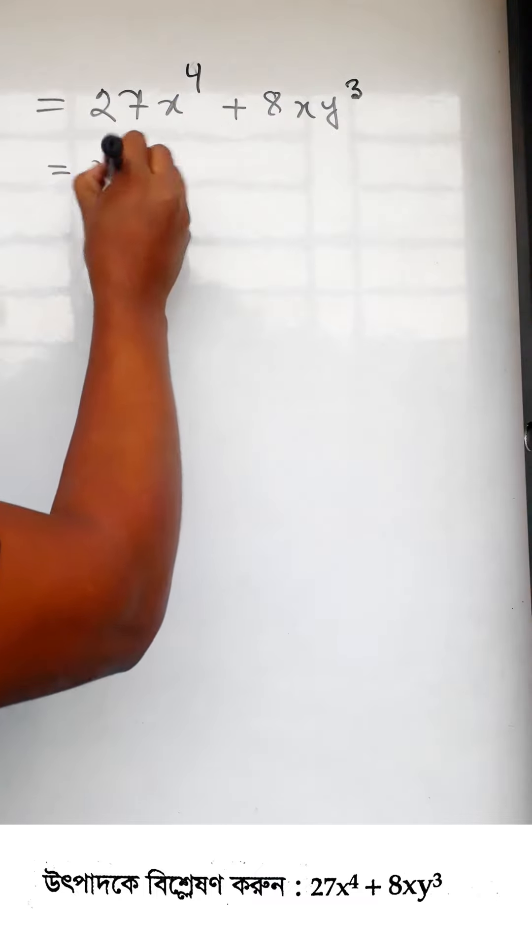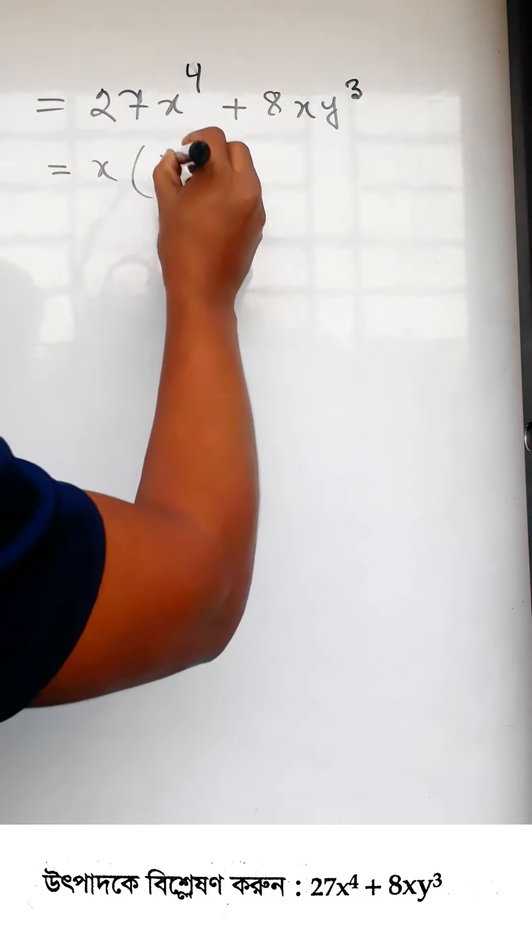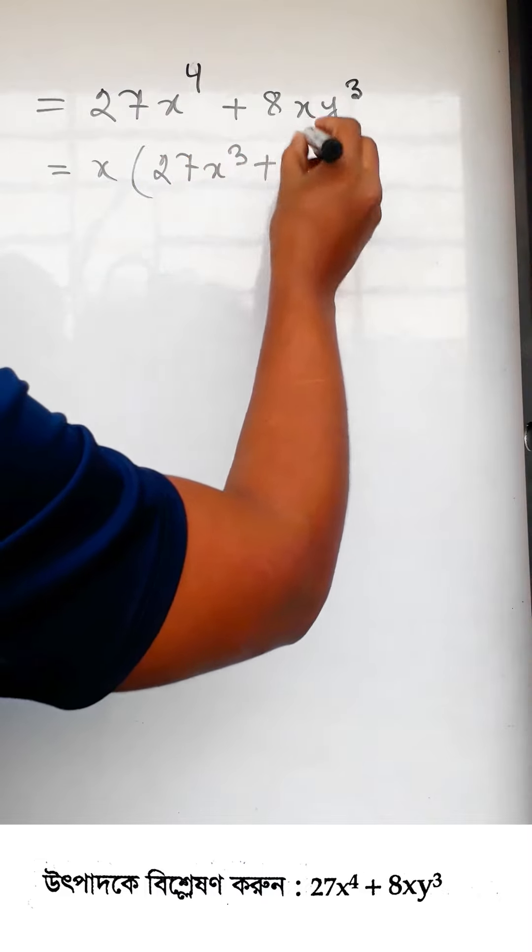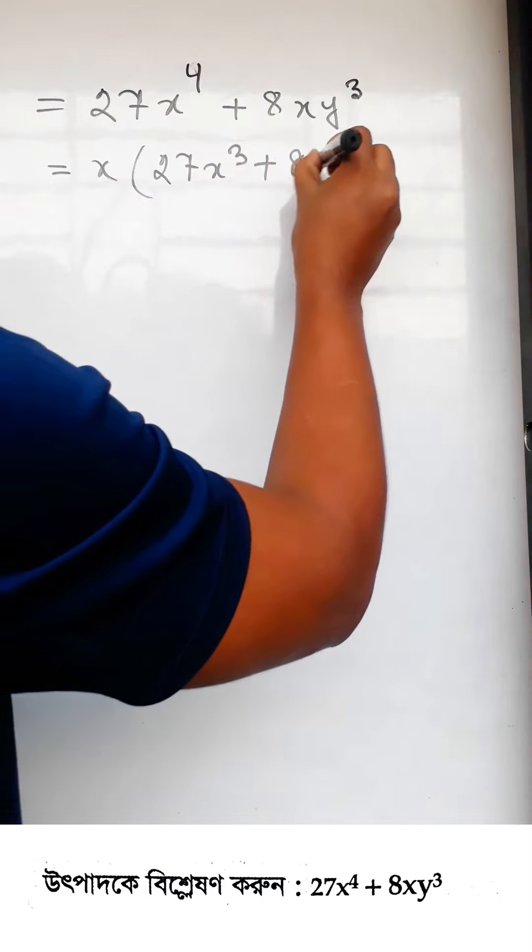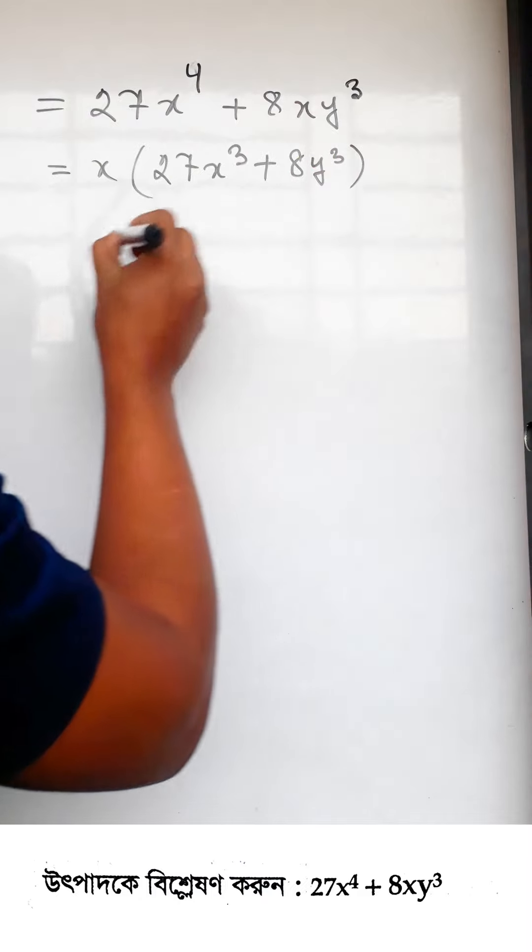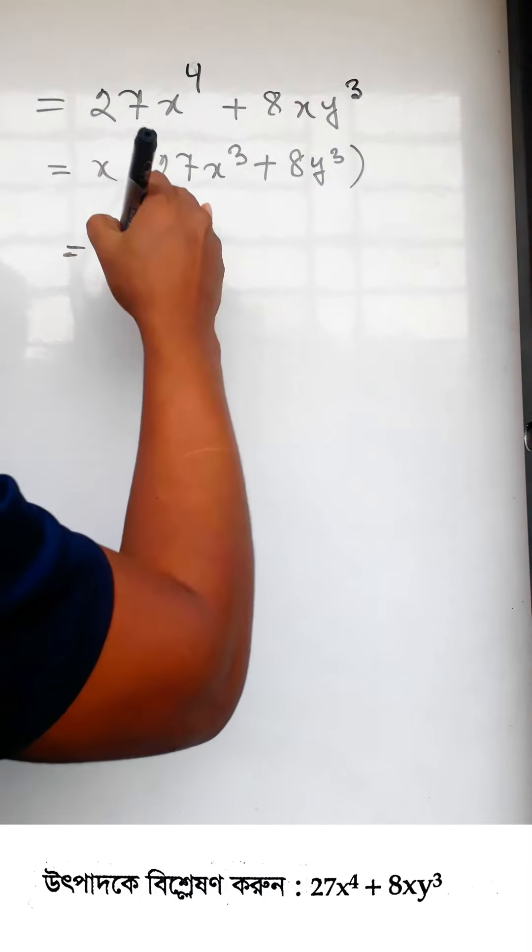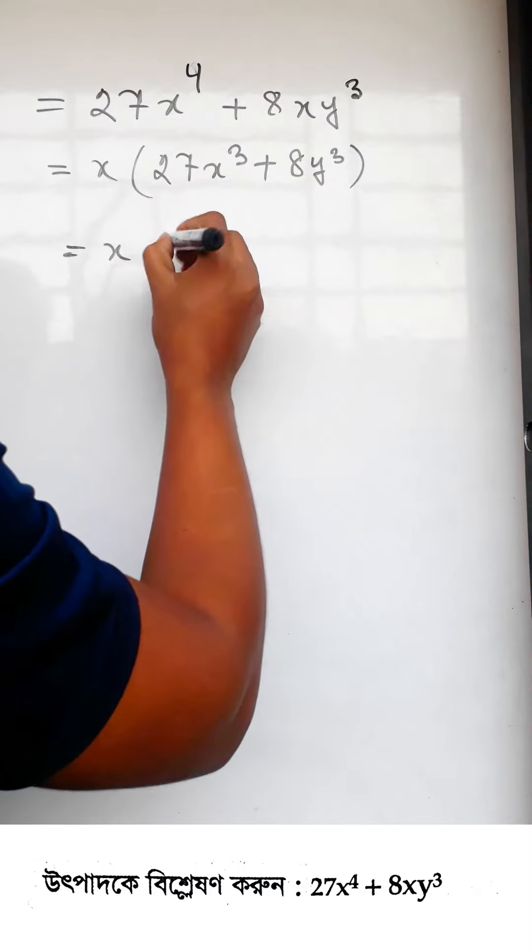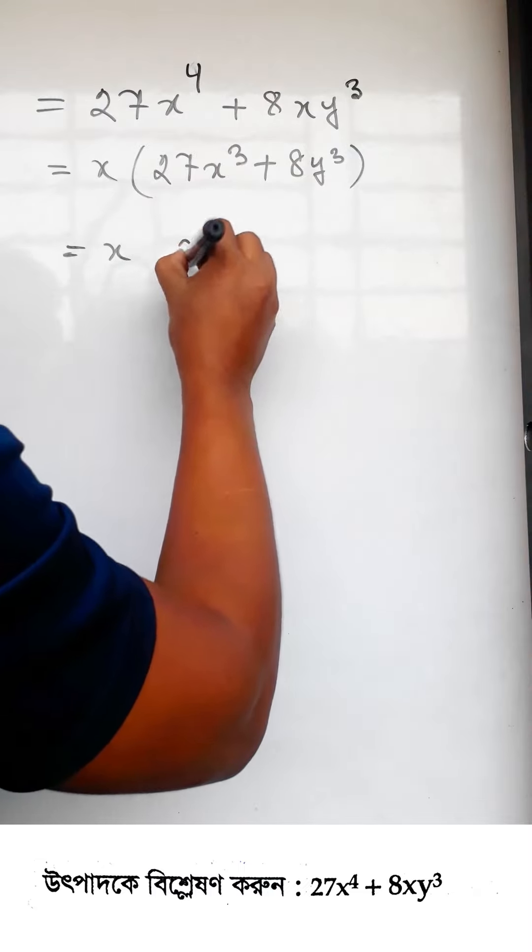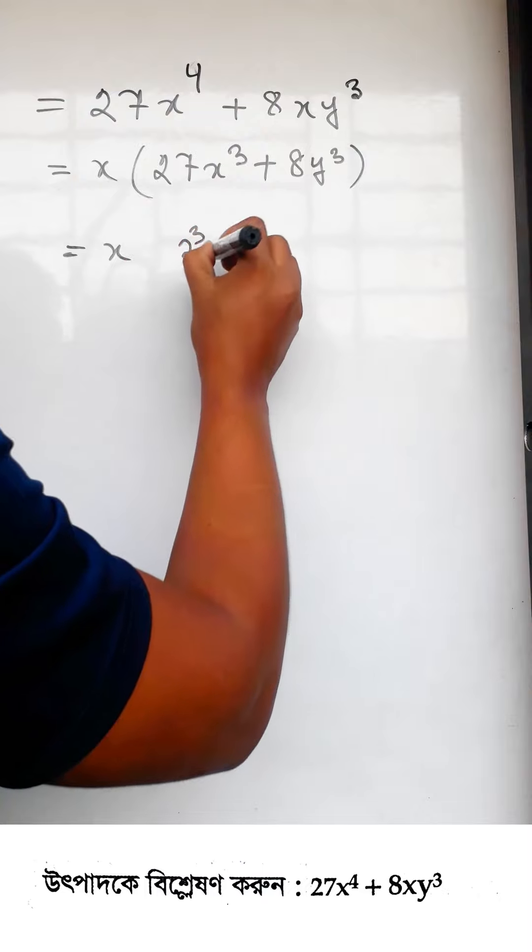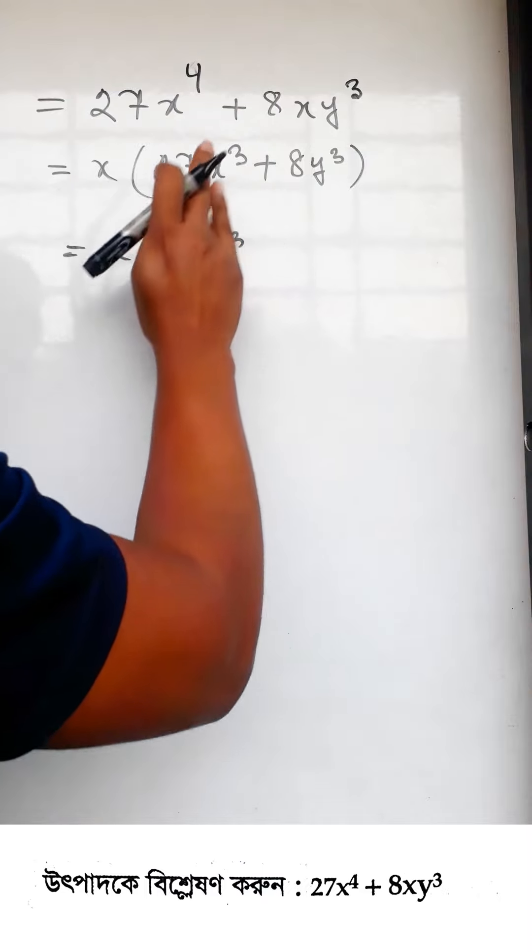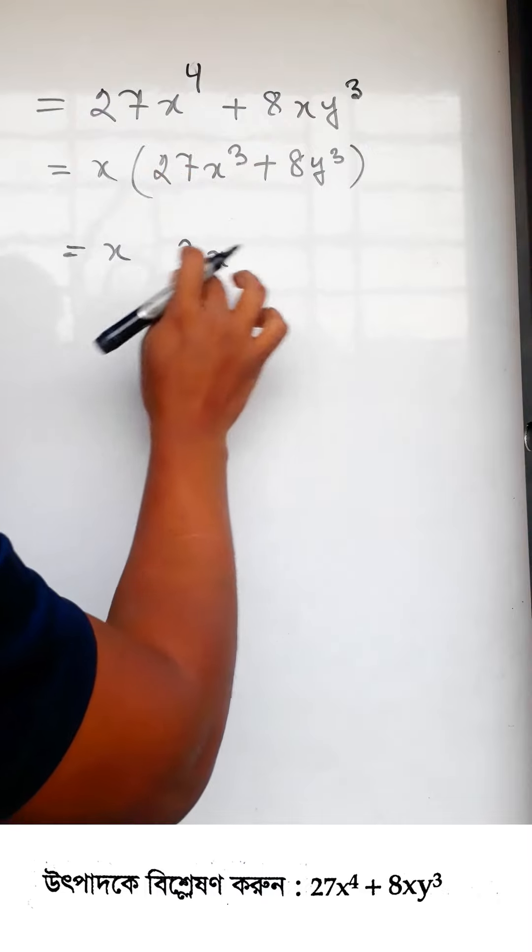First, I can factor out x from this expression. So we have x times (27x^3 + 8y^3). Now notice that 27x^3 can be written as (3x)^3, since 3 cubed equals 27 and x cubed is x^3.